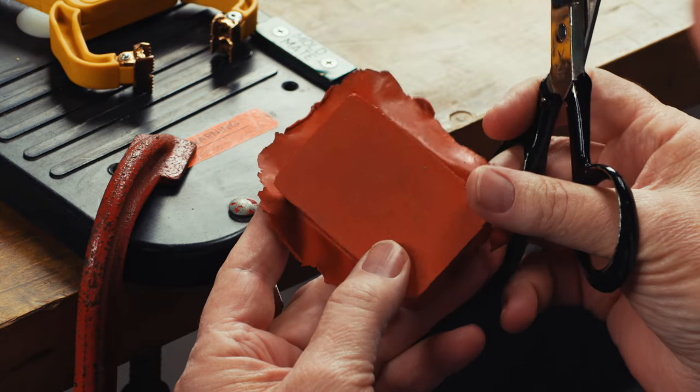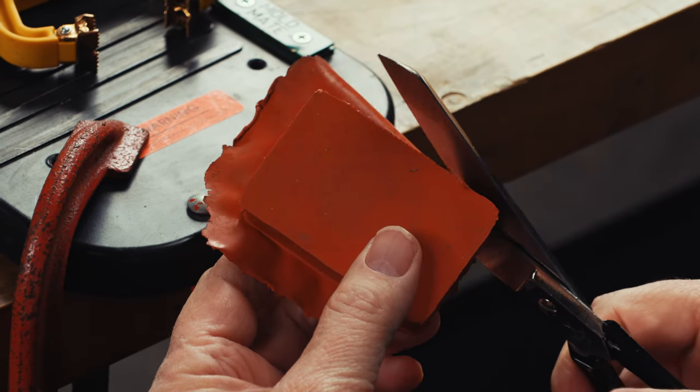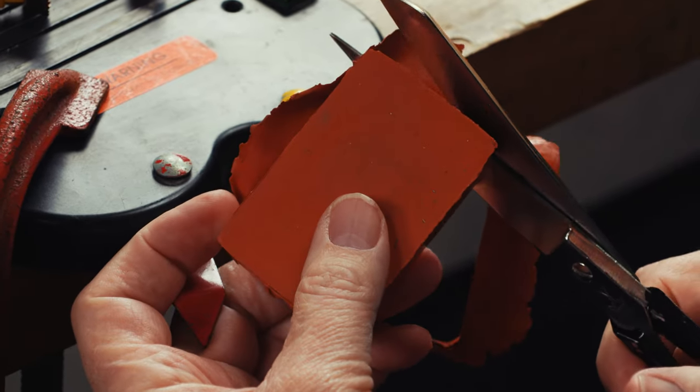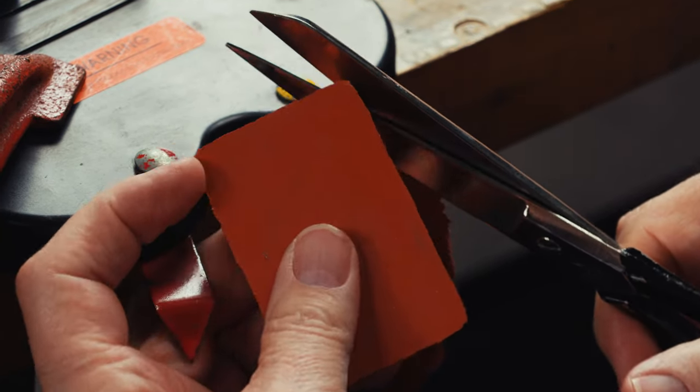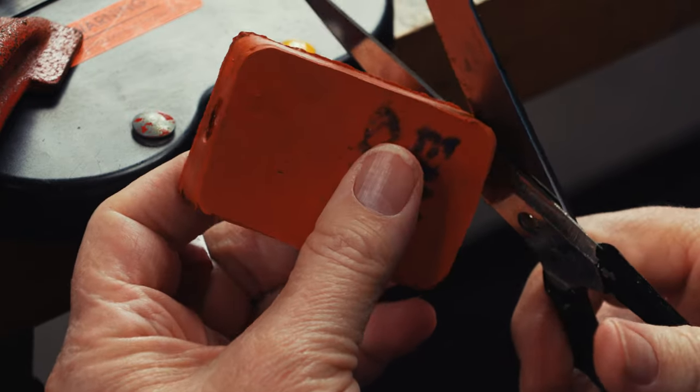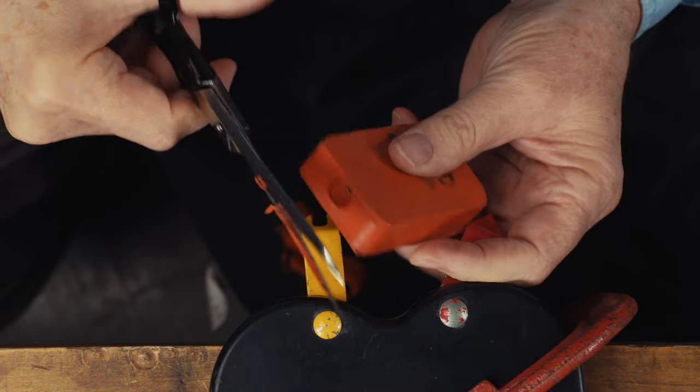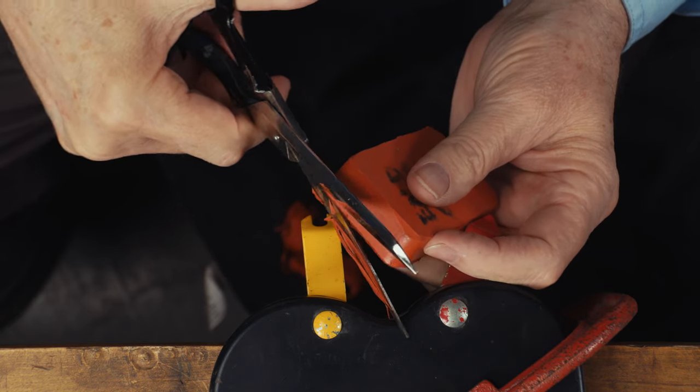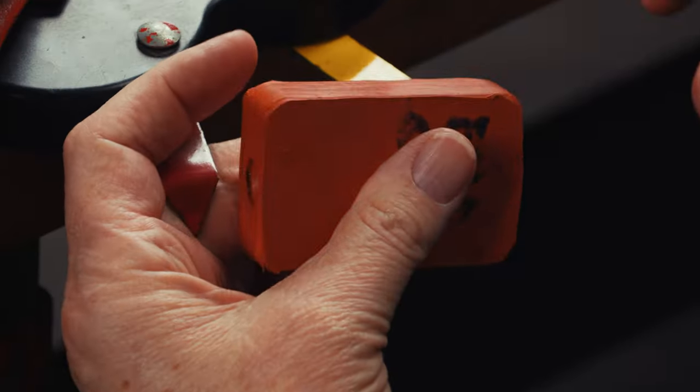After it comes out of the vulcanizer and it's cooled down, you're going to have a little bit of this flashing sometimes. I just take a pair of scissors and trim that off so it doesn't get in your way when you're cutting. Just go around and trim it like this. The other side doesn't have quite as much as the first side, but still a little bit in the way.